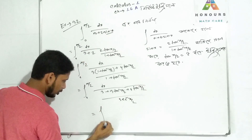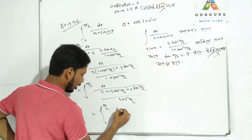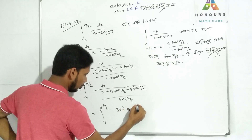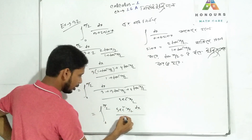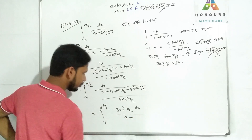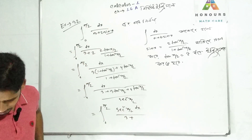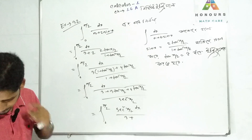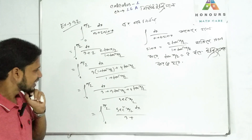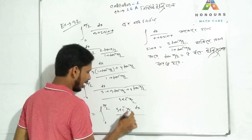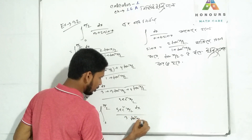We continue from 0 to π/2, rearranging to get the expression in terms of tan(x/2), placing it in the form involving 3 plus tan squared(x/2) in the denominator for the substitution step.